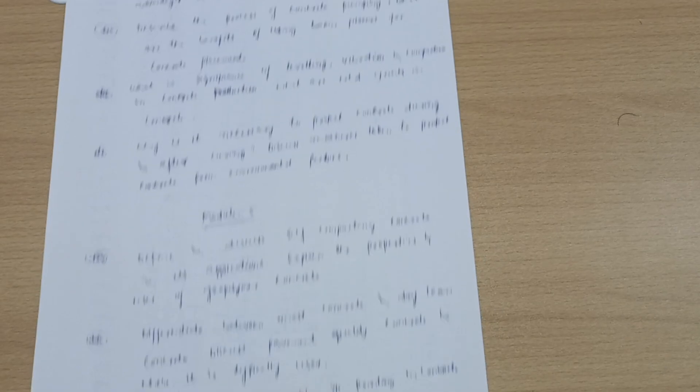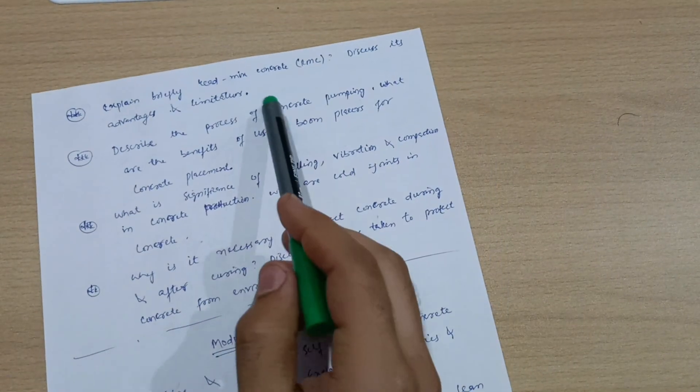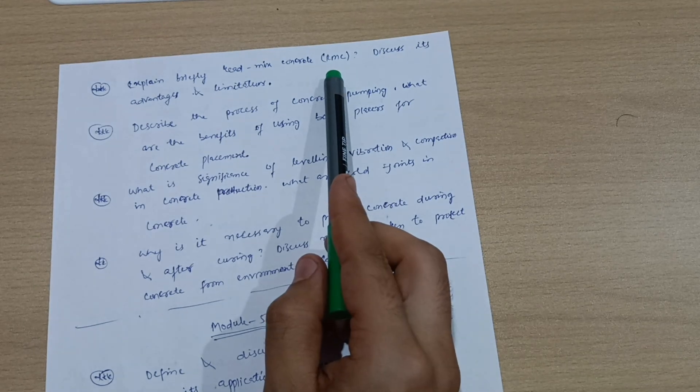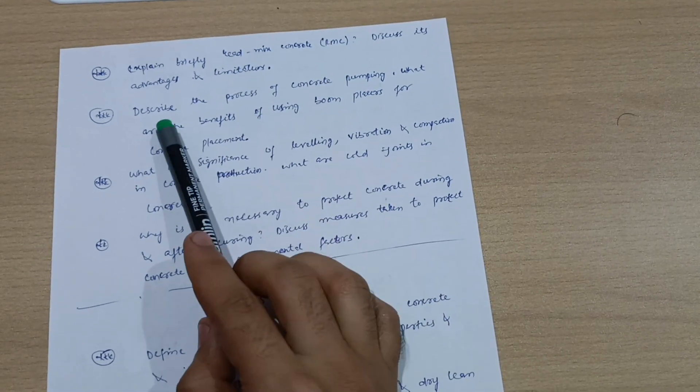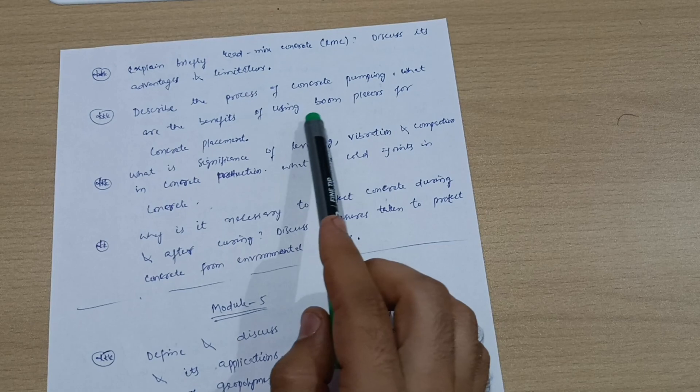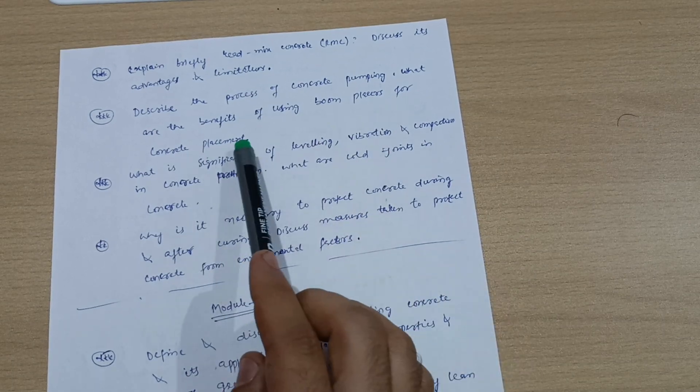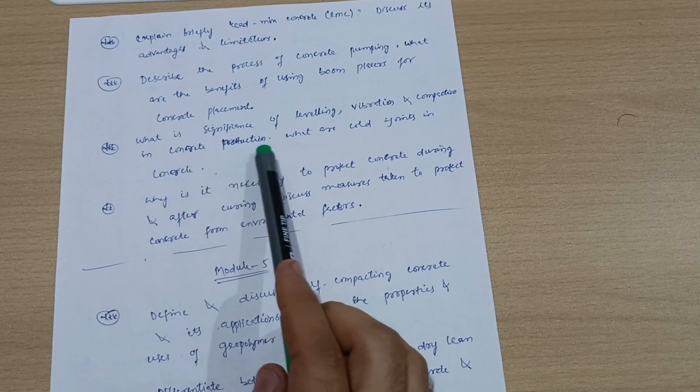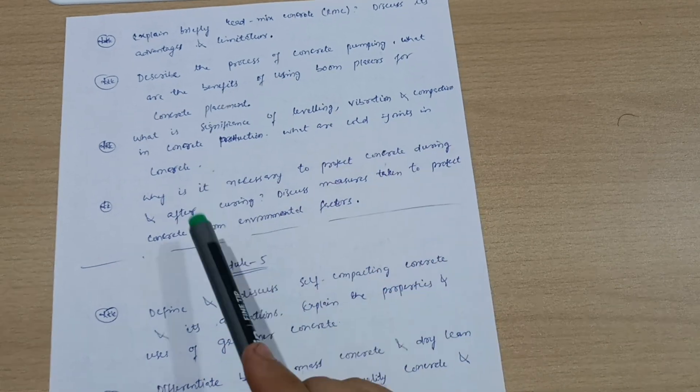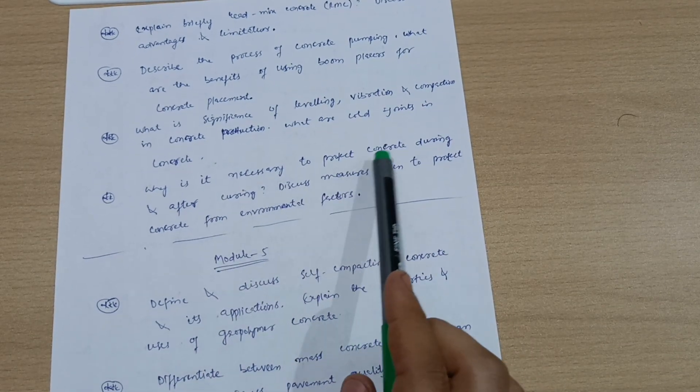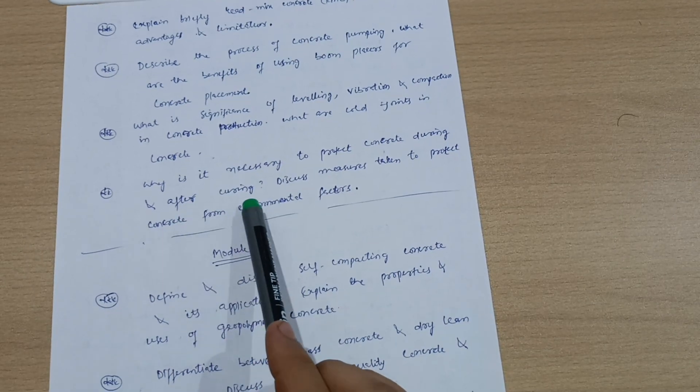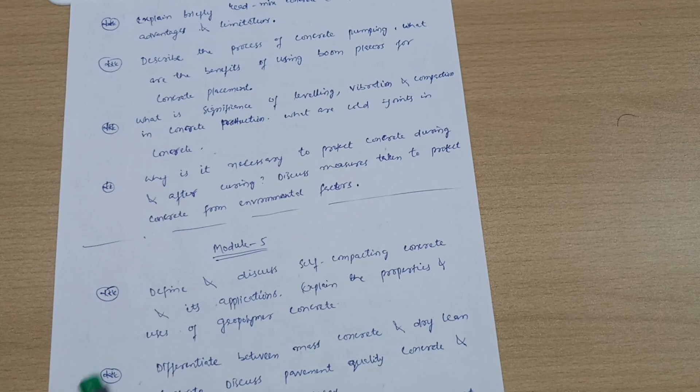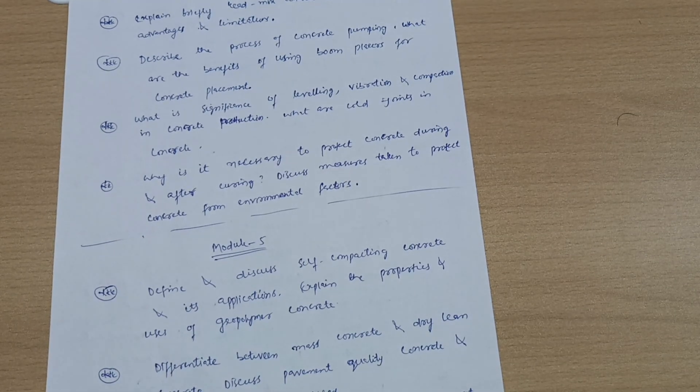Four questions from Model 4 are here. Explain briefly ready mix concrete (RMC). Discuss its advantages and limitations. Describe the process of concrete pumping. What are the benefits of using boom placers for concrete placement? What is significance of table vibration and compaction in concrete production? What are cold joints in concrete? Why is it necessary to protect concrete during and after curing? Discuss measures taken to protect concrete from environmental factors. These are all about important questions of Model 4.